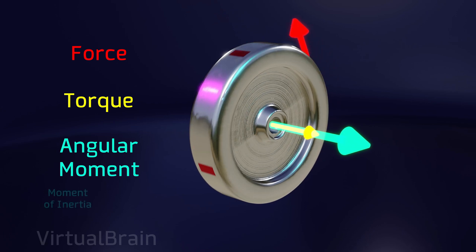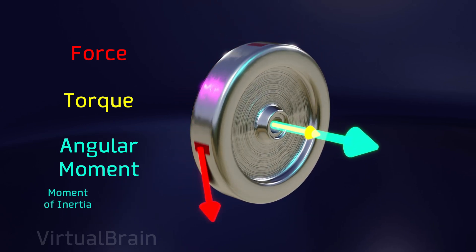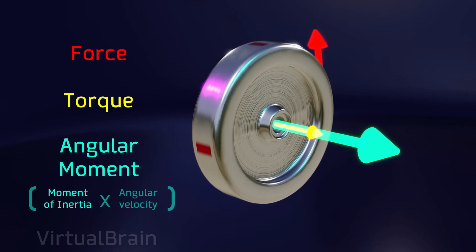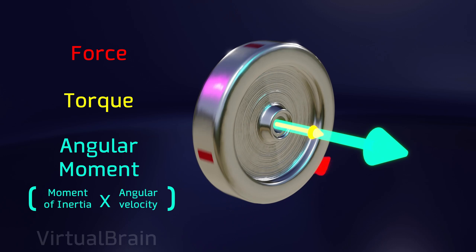First, the moment of inertia of the system, which depends on its shape and mass distribution, and second, the angular velocity, which tells us how many degrees the system rotates during a defined period of time.